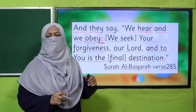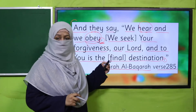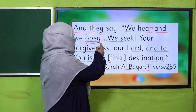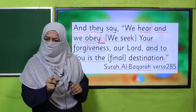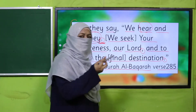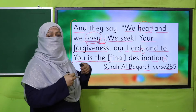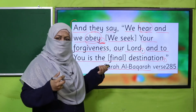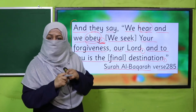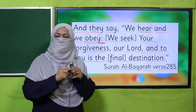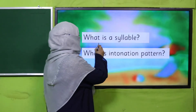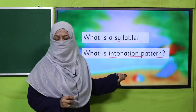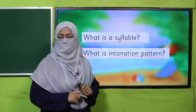Now, my dear children, whenever there are punctuation marks in writing, while reading or speaking we express them. When there is a full stop, we stop here. When there is a comma, we stop for a little while. This is how we read and pronounce. What we are going to learn today is how to express questions and statements differently. Pause the video, answer these questions to your teacher, and then come back.